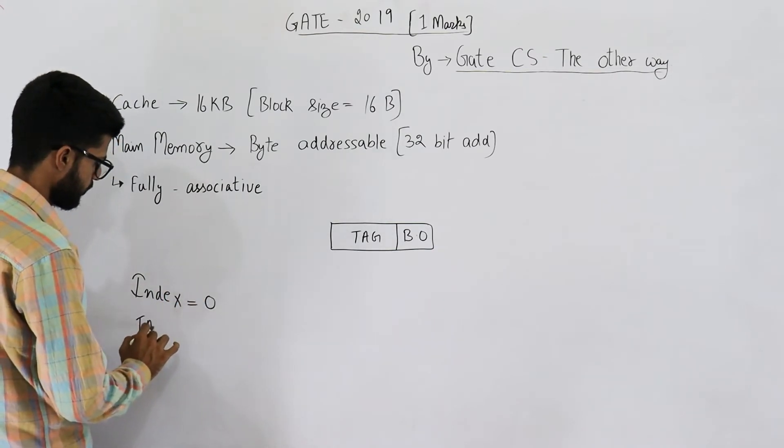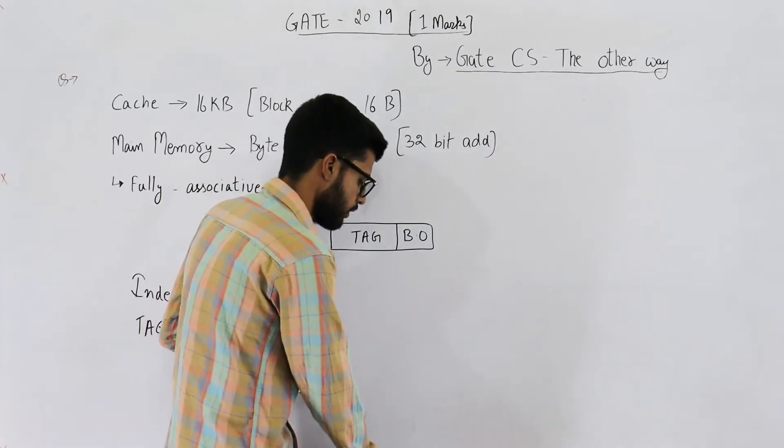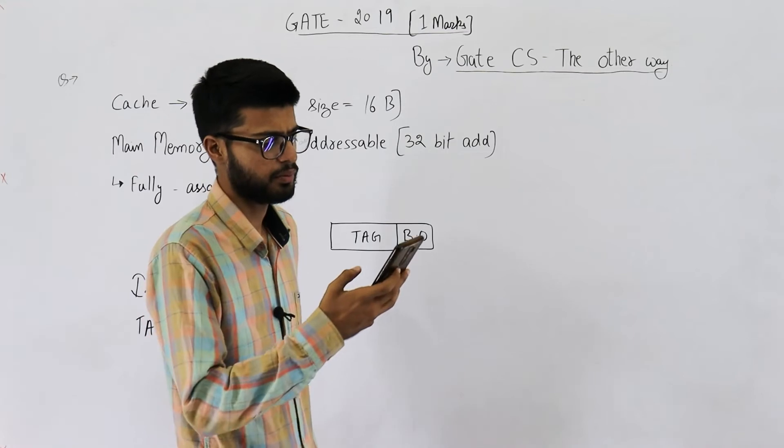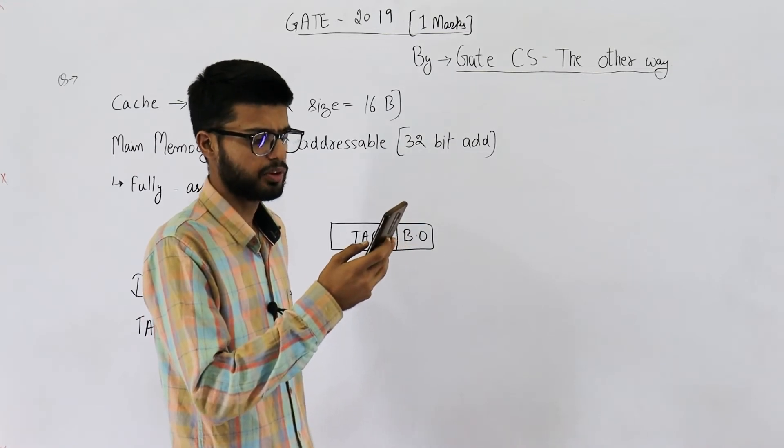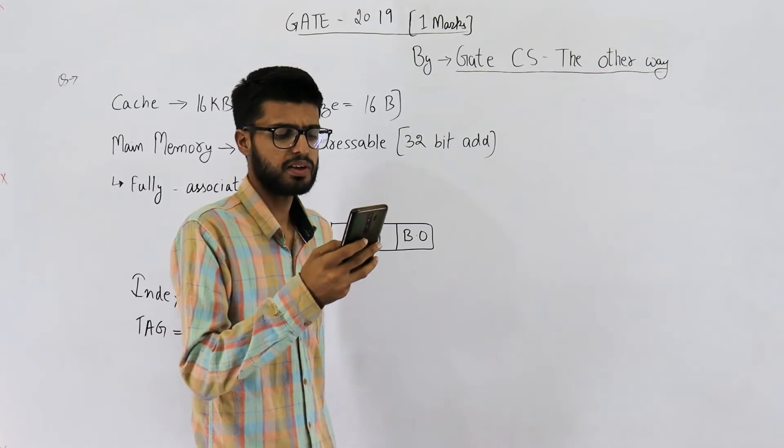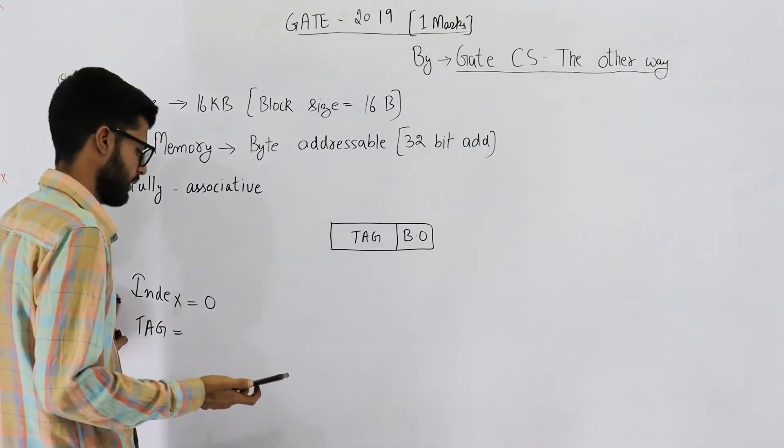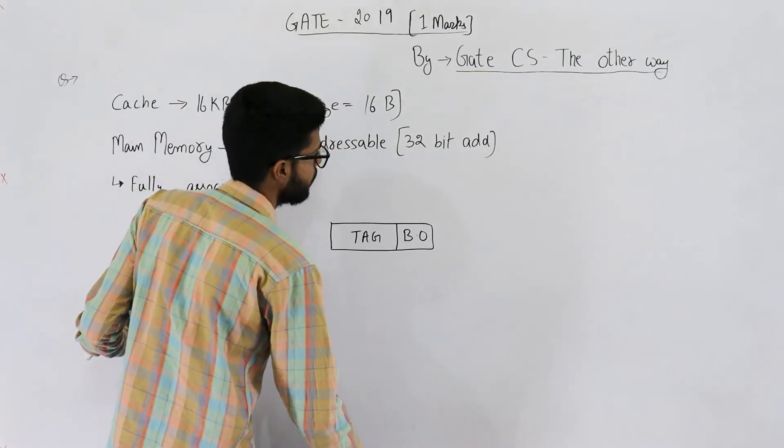And now we'll be calculating the tag field. Anyways, two options can just be eliminated. These are option number B and option C. They are saying 28 bits and 4 bits, 24 bits and 4 bits. But you know index field is 0 bits. So eliminate B and C.